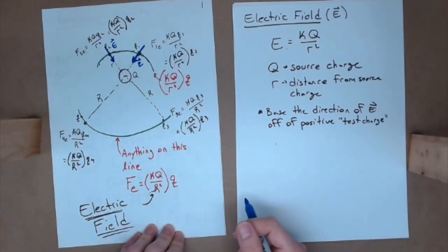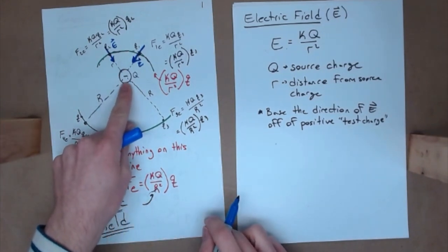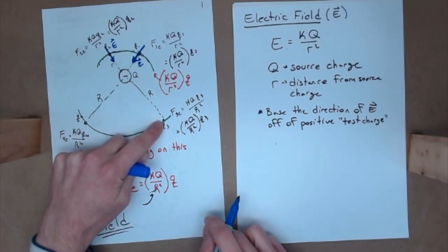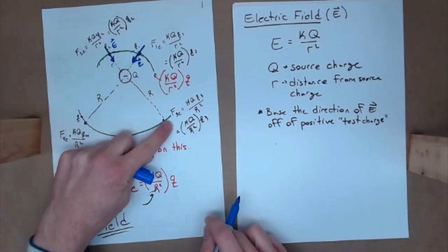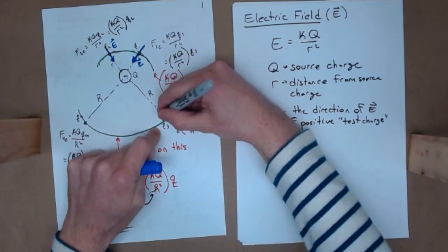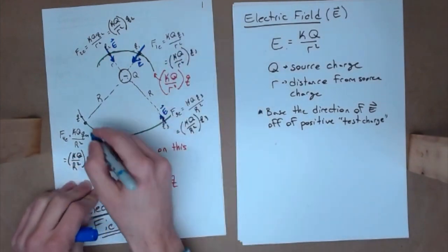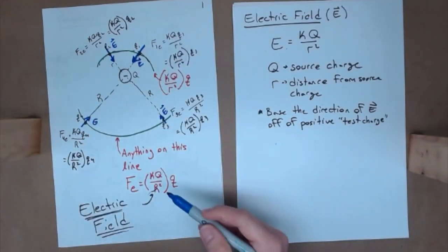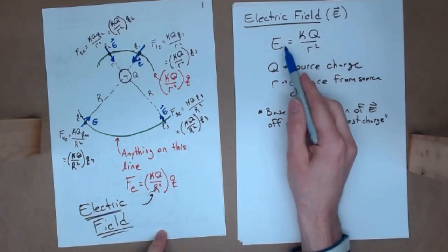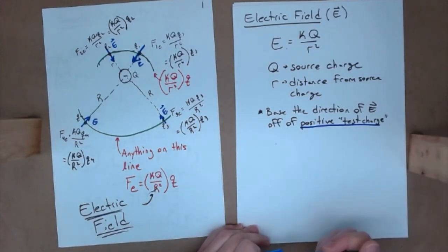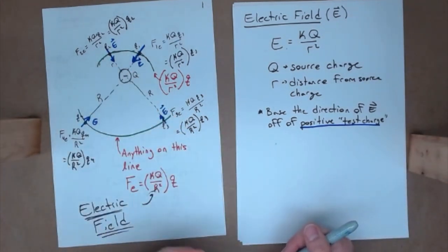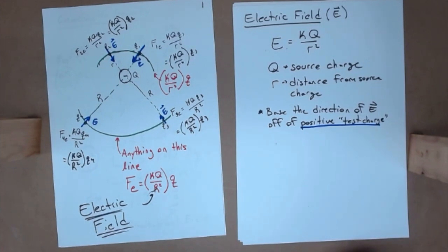Suppose I put a negative charge at Q3. The direction of the field due to the source charge still doesn't depend on Q3 — I ask: if this is a positive test charge, which way does it go? It goes toward the negative source. I deliberately draw the electric field vector smaller at greater distances because as distance increases, the field weakens. The key is that we base direction off of a positive test charge; otherwise it could point toward or away from the negative, which isn't an issue with gravity since gravity only ever attracts.